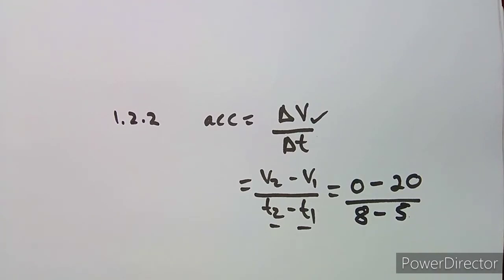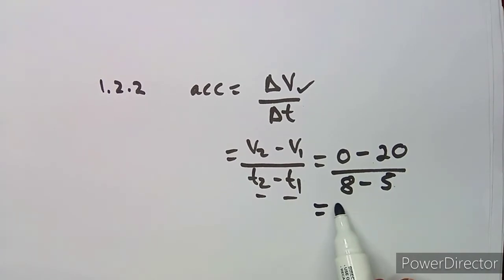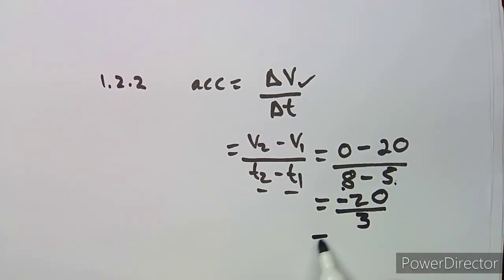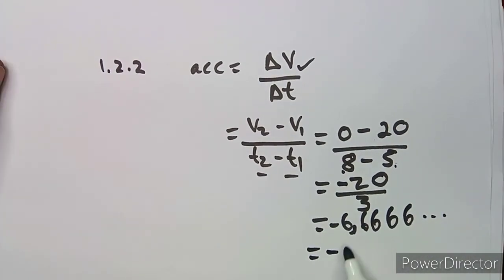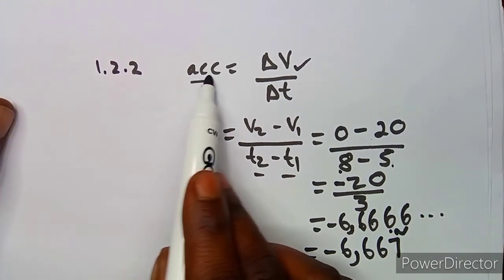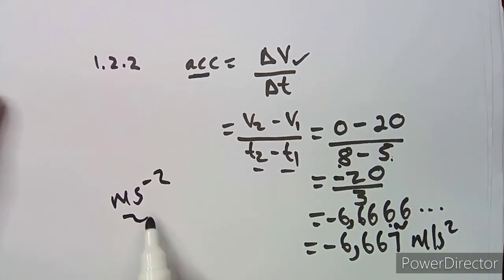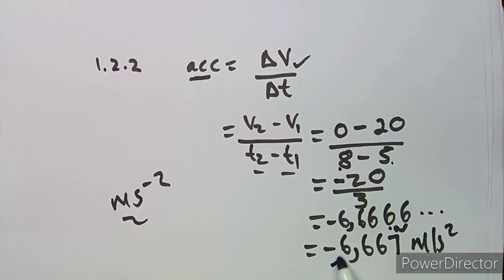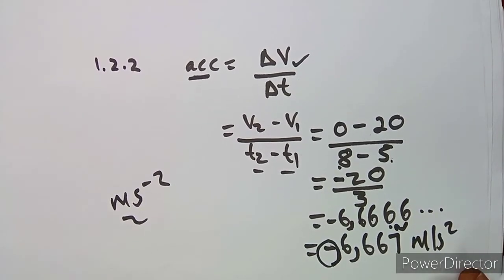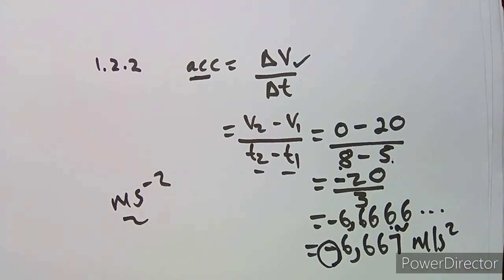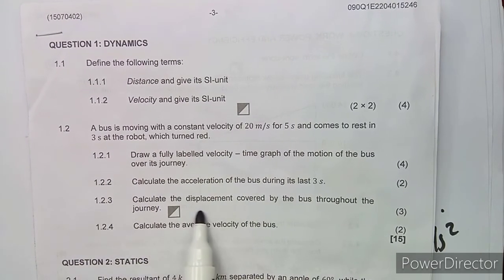Simplifying: that is −20 over 3, which gives a recurring decimal of −6.6667. Rounded off properly, this is −6.667 meters per second squared, written as m/s² or m·s⁻². Take note this is a deceleration, which is why we obtain a negative value — the velocity was decreasing.